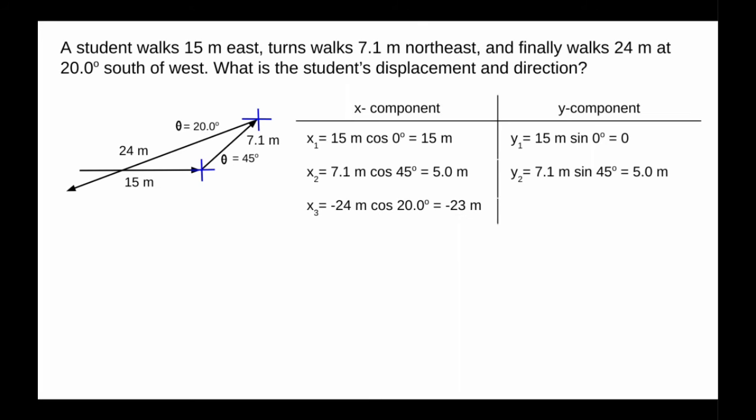But the beauty of having south of west is it tells us what quadrant we're in. We automatically know that things are going to be negative. y₃ is also negative, -24 sin 20°. Had it been in the fourth quadrant, we'd keep x positive and y negative. But in this case, they're both negative. We sum them up.